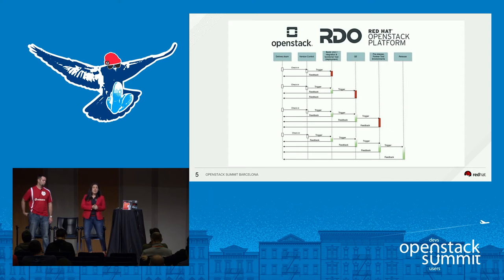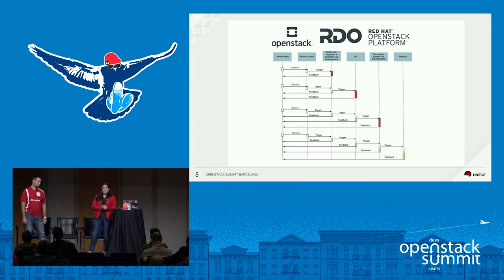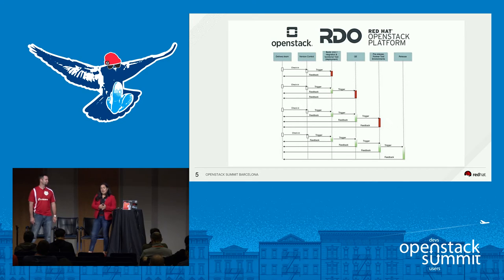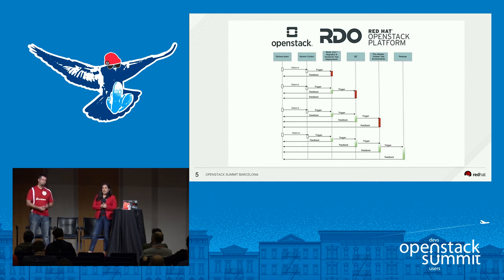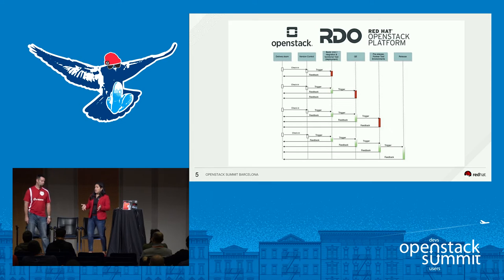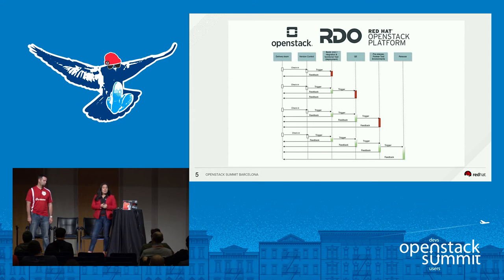Our QE team tests hundreds of different architectures and deployment scenarios, but we can't really cover the one scenario we care about. That's why we partner with folks like Rackspace — to deliver pre-release deployments of OpenStack to them. Once that is ready, we're ready to announce a release we know is truly tested not just in-house, but also with our larger ecosystem.